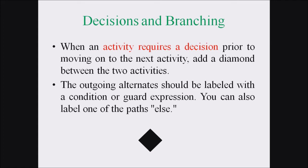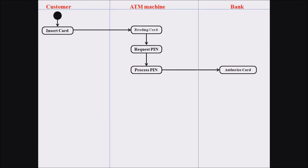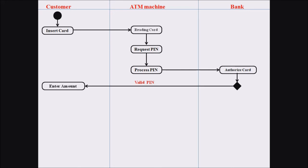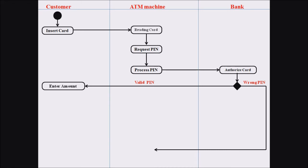In our ATM example, the bank authorizes the card and a decision arises: if the entered pin is valid, we can move to the enter amount activity. If the customer entered a wrong pin, the process cannot proceed to the next level and we have to stop the activity. So the authorize card activity is followed by a branching statement. If the pin is valid, the customer moves to enter the amount; if correct funds are available, they can withdraw. If the pin is wrong, the process moves to the stop scenario.